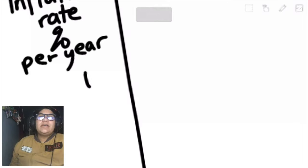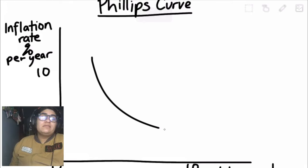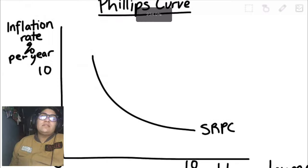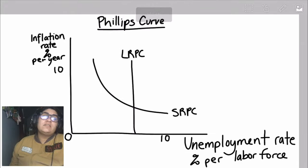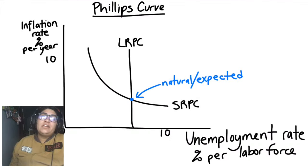We're looking at the inflation rate percent per year versus the unemployment rate, focusing on the short run Phillips curve versus the long run Phillips curve. The long run is always going to be at that natural rate — I believe it's around four percent. Where these lines intersect is the natural or expected unemployment rate.